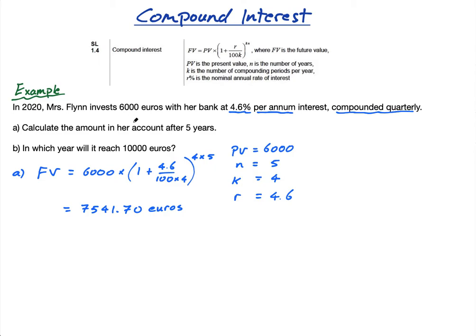Part B: In which year will it reach 10,000 euros? So now it's saying the future value is 10,000. Let's write this over here. Future value is now 10,000. What do we not know though? We don't know how long it's going to take.